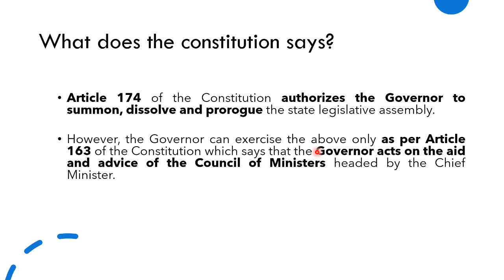This raises the question: what does the Constitution say about the power of the governor? Article 174 of the Constitution authorizes the governor to summon, dissolve, or prorogue the assembly. However, this power is not absolute — it is exercised as per Article 163 of the Constitution, which says the governor acts on the aid and advice of the Council of Ministers headed by the Chief Minister. Without such aid and advice, the governor shall neither summon, nor dissolve, nor prorogue the assembly session.